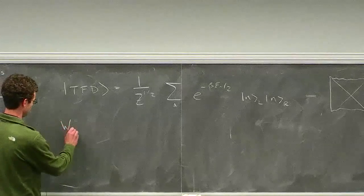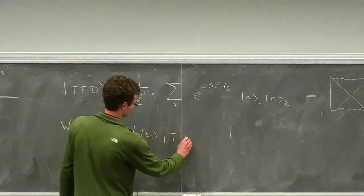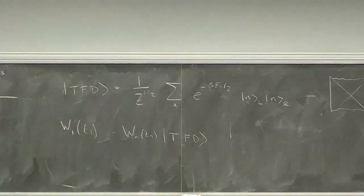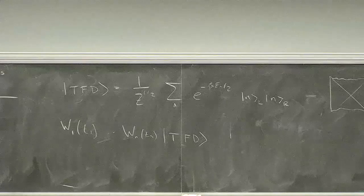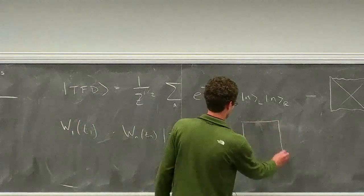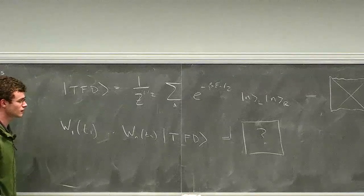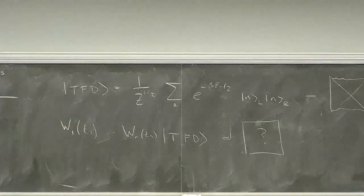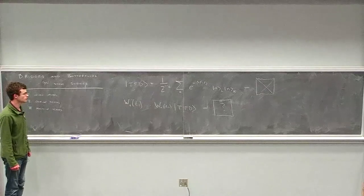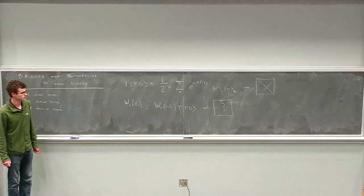The perturbed states that Steve and I have been thinking about are states of the form W1(T1) up to Wn(Tn) acting on the thermofield double. The W operators are local unitary operators that raise the energy of the thermofield double state by an amount of order one in ADS units. The goal of this talk is to fill in the geometric dual to these states, and along the way we'll find a sharp holographic description of the butterfly effect and a precise role for the scrambling time.